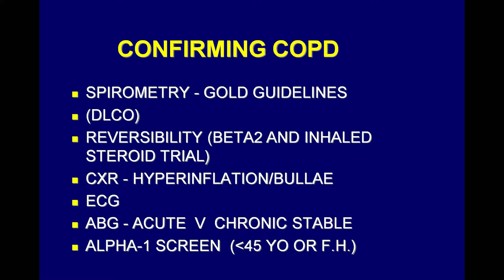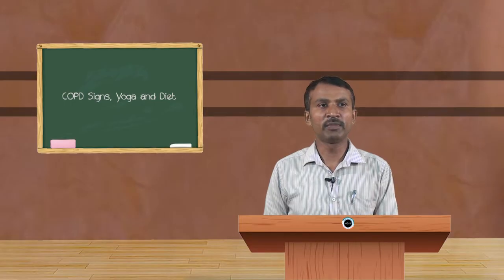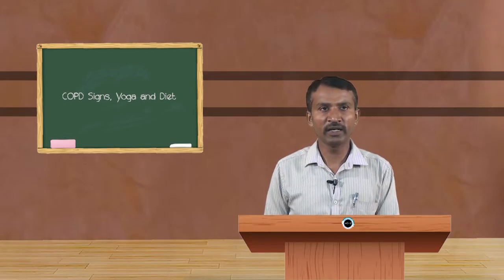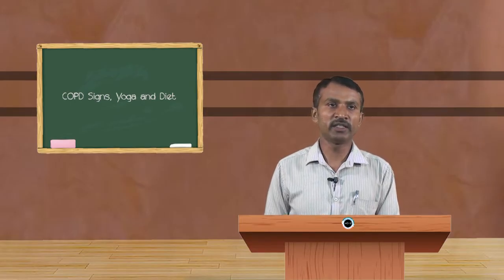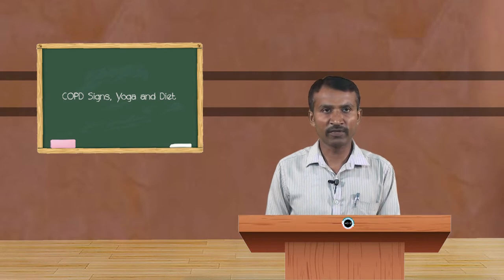Reversibility testing with beta-2 and inhaled steroid trial, hyperinflation or bullae assessment, ECG — electrocardiogram for acute versus chronic stability — and alpha-1 screening if the age is less than 45 years.